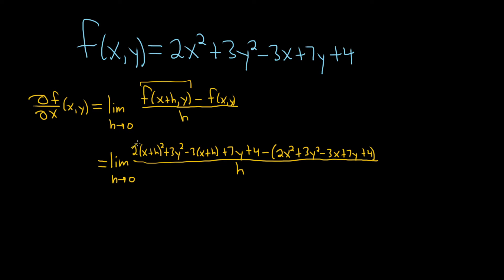So again, it's just f of x plus h comma y, f of x,y. It's two variables. It's harder to say.